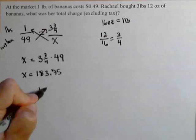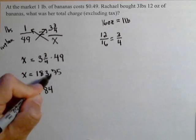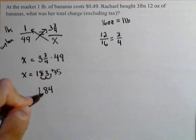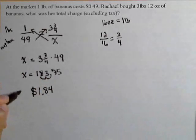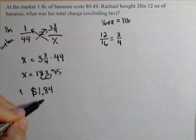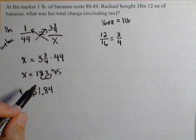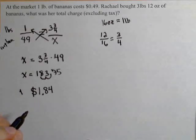Maybe we'll use 184, and then we're going to move the decimal point two places to get it back into dollars. So, the 3 and 3 quarters pounds of bananas cost $1.84.